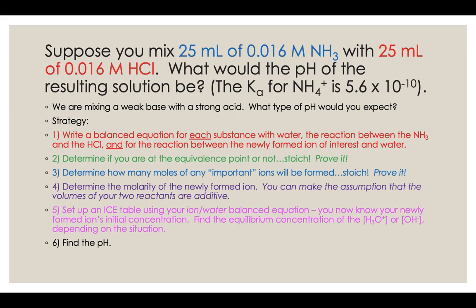What if we mixed 25 milliliters of 0.016 molar ammonia with 25 milliliters of 0.016 molar hydrochloric acid? What would the pH of that solution be? It also gives us the Ka value for the ammonium ion. We're mixing a weak base with a strong acid — what type of pH would you expect?